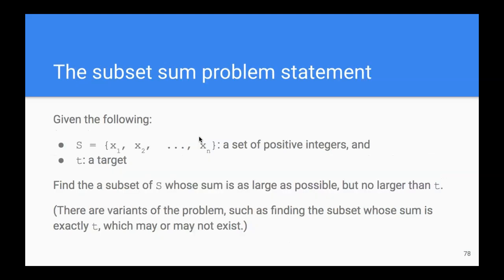This is what the subset sum problem is: Given S, which is a set of positive numbers, and t, which is a target, the subset sum problem is to find a subset of all these numbers in S whose sum is as big as possible but must be less than or equal to t, the target.